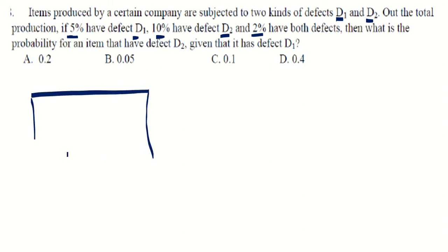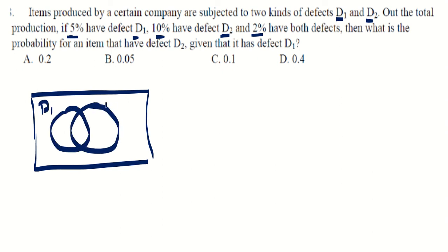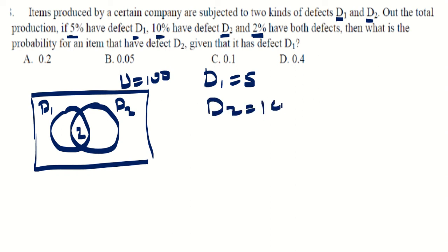Assume total production is 100. Using a Venn diagram: D1 circle = 5 total, D2 circle = 10 total, intersection (both) = 2. So D1 only = 5 − 2 = 3, D2 only = 10 − 2 = 8. Without any defect: 100 − (3 + 2 + 8) = 87.